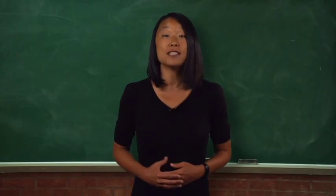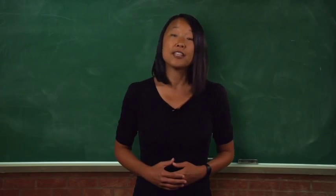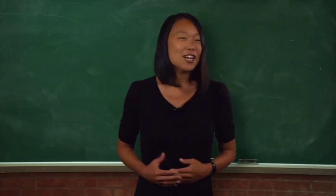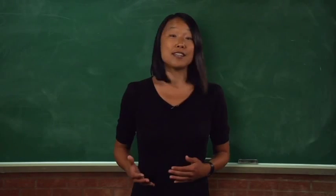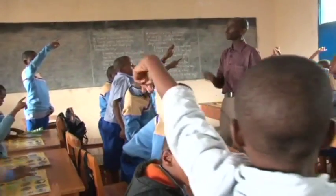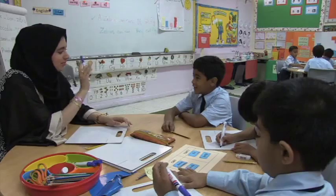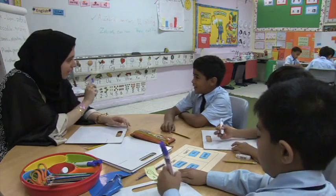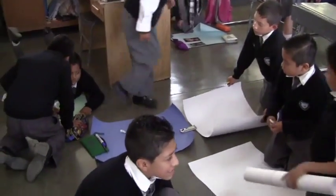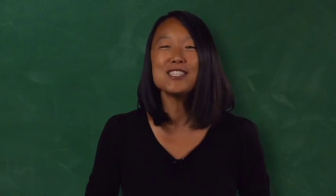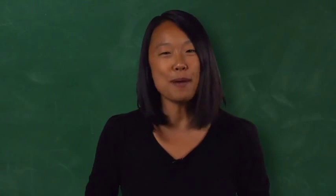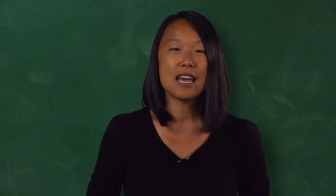Unlike adults and even teenagers who can manage their own learning and understand why they are sitting in English class, children are ruled by their own immediate needs and desires, which usually do not include learning a foreign language. Young learner English teachers need to develop a plan for managing their classroom that will keep young learners engaged and on task, and not give them opportunities to misbehave and get out of control. Let's look at some useful tips that will help you manage your classroom more effectively so you can get the most out of Our World and create the kind of learning environment that leads to student success.